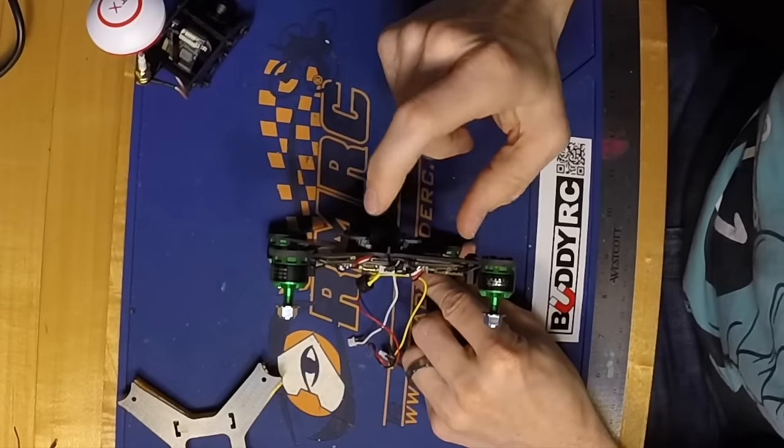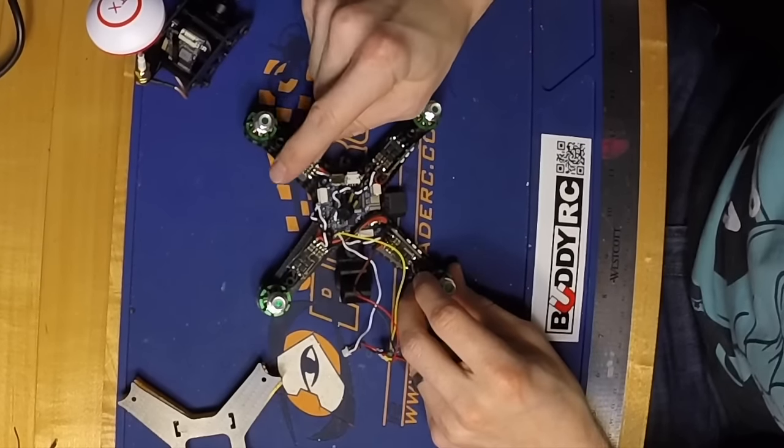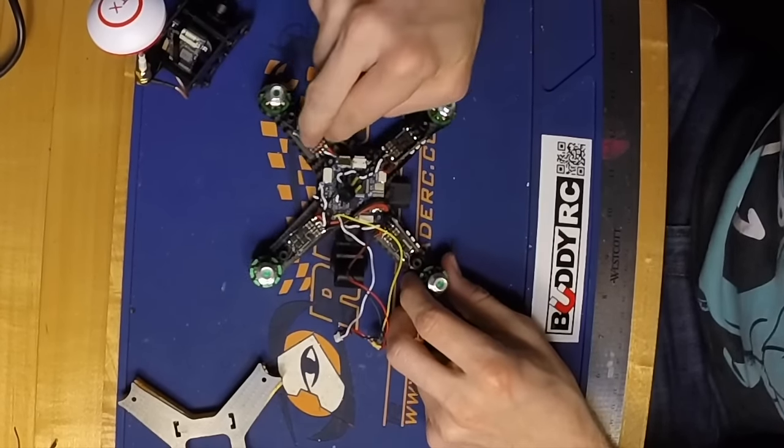The only wires I run from the PDB on the bottom up to the top area are the wires for the ESCs, the power and ground. So I've got two for each ESC here.